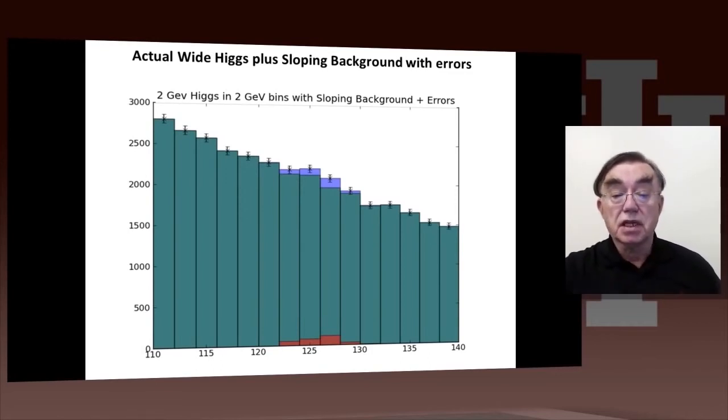So, this is the same plot as before, but I put on the errors. These are the estimated errors, the square root of the number of events. And so you can see that this is not a huge enhancement. Probably 2 GeV is actually a little pessimistic, and the actual width is a little smaller than that. But this is meant to give you an idea as to what's going on.